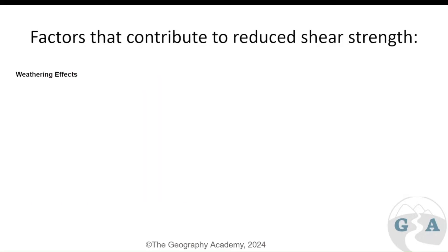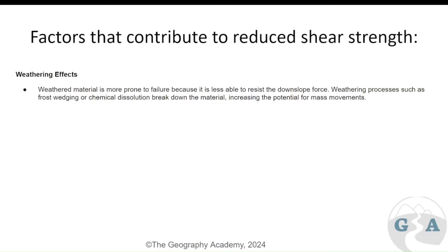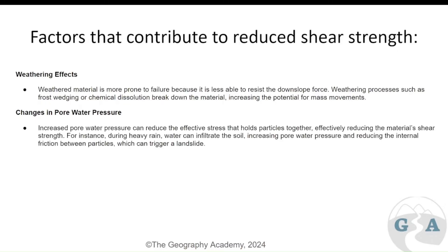Contributing to the reduction of shear strength, we have weathering, which breaks down the slope and strength from within. Both physical and chemical weathering have these impacts — things like freeze-thaw weathering, frost wedging, and chemical processes like solution or carbonation. The change in pore water pressure — the amount of water accumulated — is also important. If soil or regolith (the layer between soil and bedrock containing large rock pieces) becomes waterlogged, this can more easily cause a landslide.